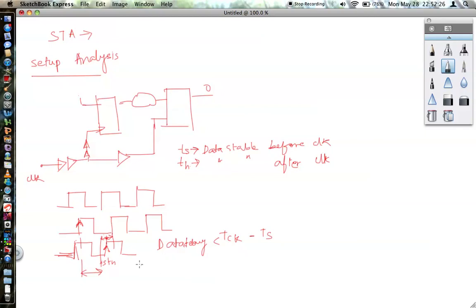And what all is part of the data delay? It is the four buffer delay, which is T launch clock delay, plus the T clock to Q delay, plus the combinational delay. This should be less than your T clock minus T setup plus the T capture.